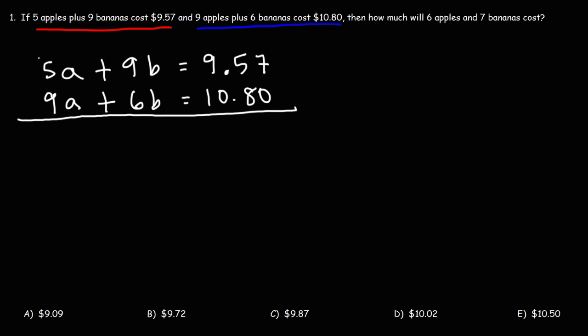So what I'm going to do is I'm going to multiply the first equation by 2 because 18 divided by 9 is 2. 18 divided by 6 is 3. So I'm going to multiply the second equation by 3, but rather by negative 3 because I want positive 18B in the first equation, negative 18B in the second equation because those two numbers will add up to 0.